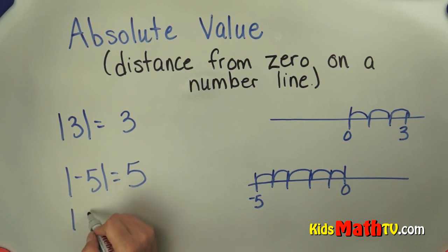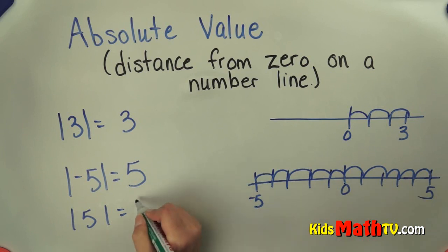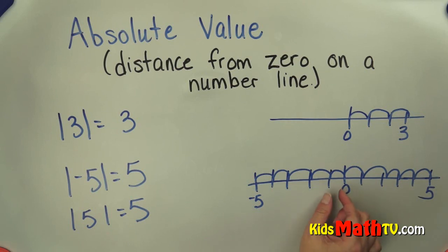So the absolute value of positive five would be one, two, three, four, five. It is also one, two, three, four, five spaces from zero, so it is also five. So the absolute value is simply the number of spaces between zero and that number.